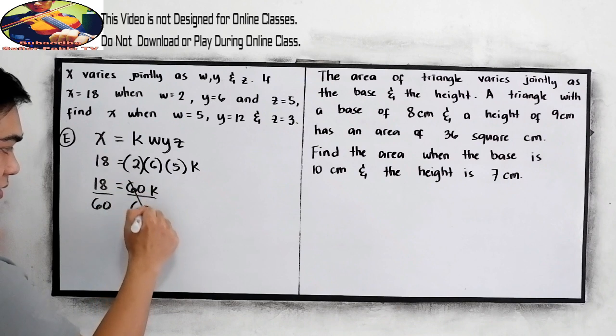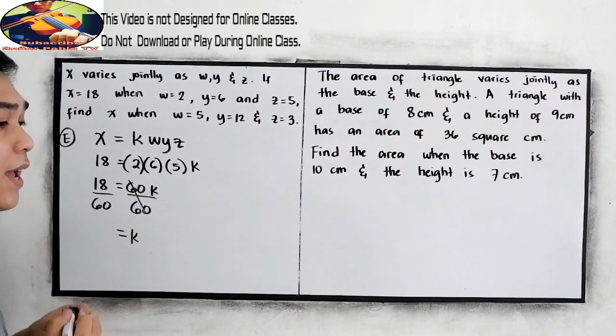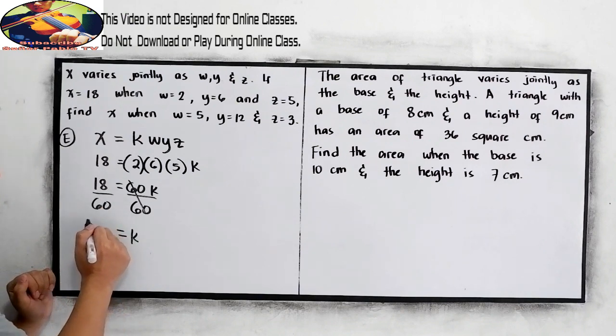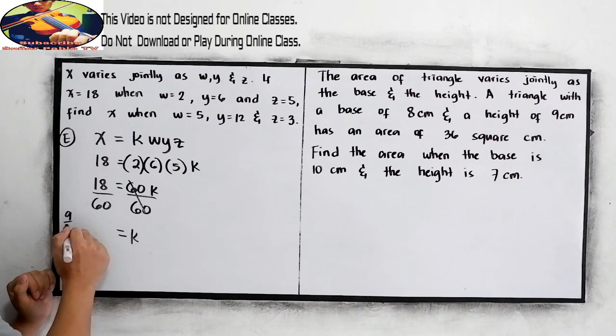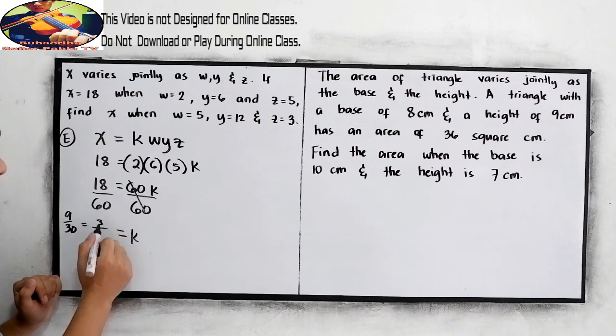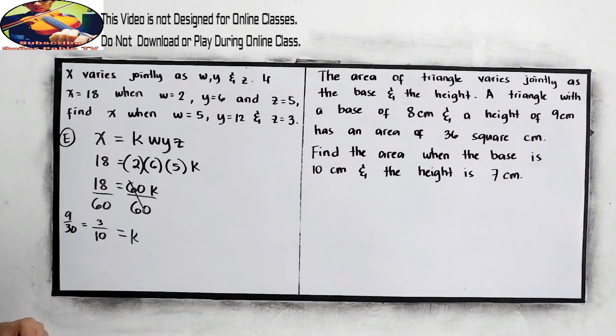So k is equal to 18 divided by 60. Divisible by 2: 9 over 30. Still divisible by 3: 3 over 10. So k is 3 over 10.